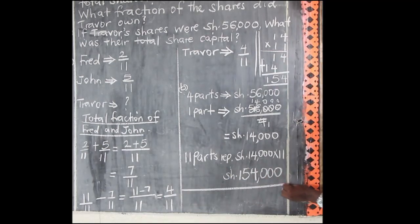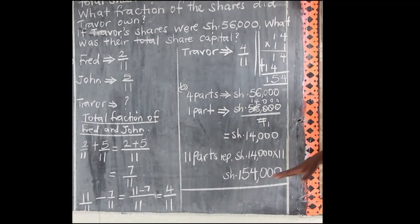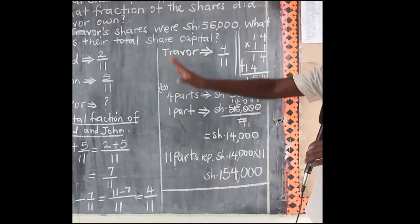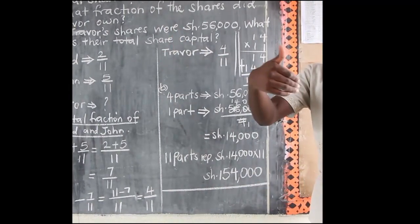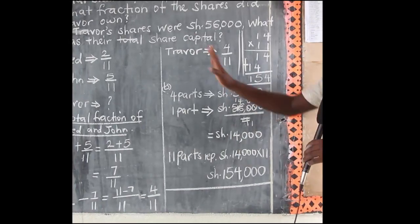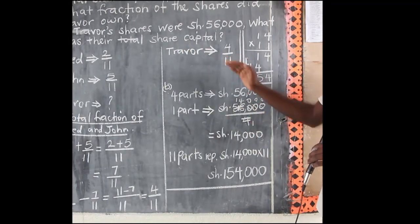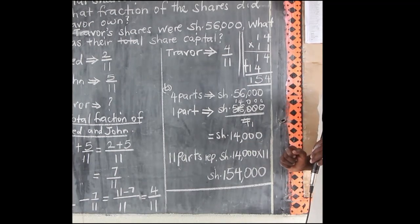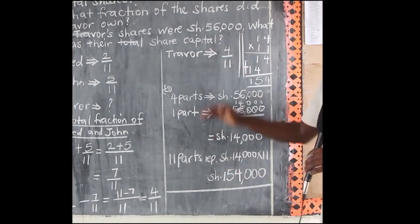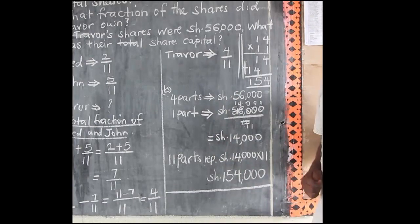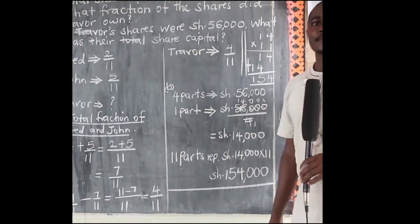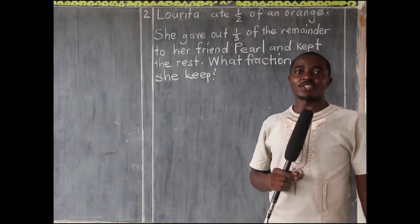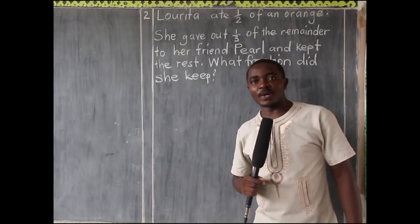And that is all. If you got 154,000 shillings as the answer, thank you so much. If you did not make it, please follow the steps and see where you went wrong and make the correction. Now let's go to our example.